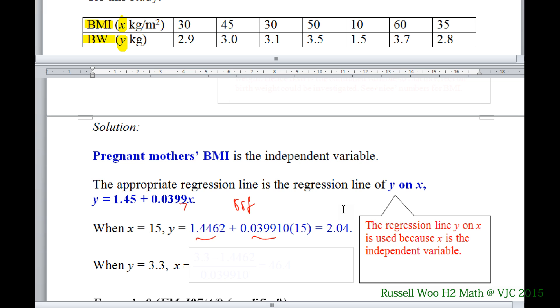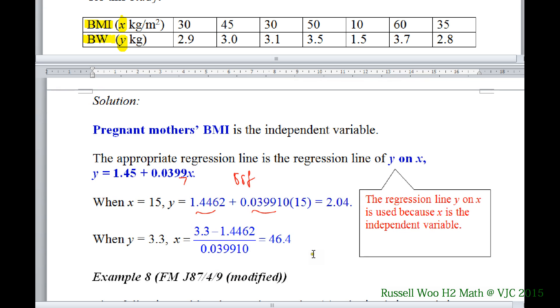To calculate the value of X given Y is the same one. You just do the appropriate things. You substitute X. Y is 3.33. You get a value. Finally you should get 46.4.